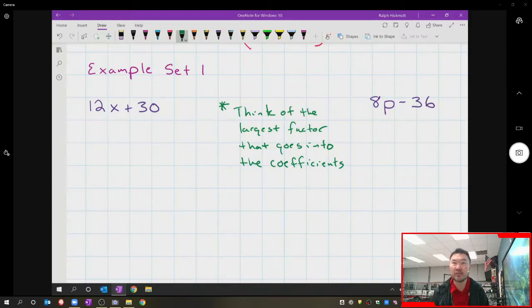For 12 and 30, the largest number that goes into both is 6. You want to find the largest number because if you do, it saves you a lot more extra steps. The second thing we have to do is divide the factor into each term.